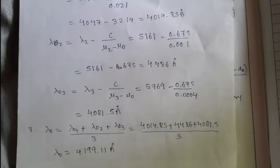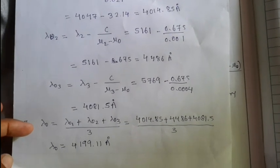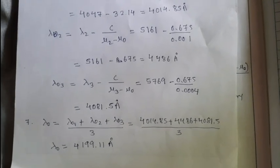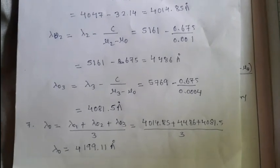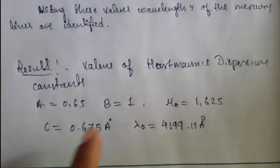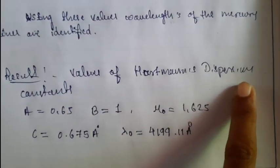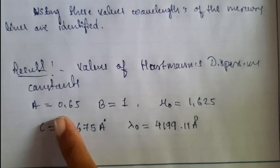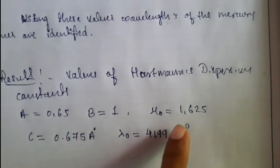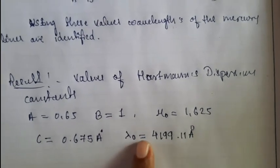This is how you can convert the values into wavelengths with the help of the Horstman dispersion formula. At the end, you can write the result: values of Horstman dispersion constants a equal to 0.65, b, mu 0, c value, and lambda 0. Thank you.